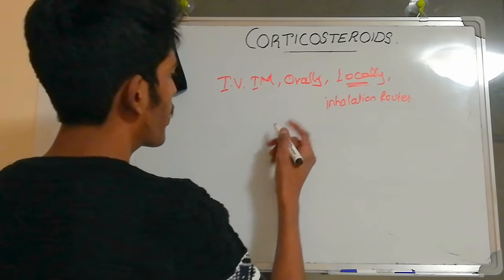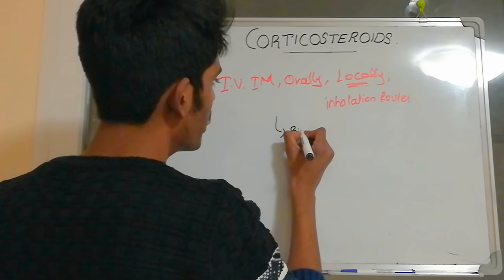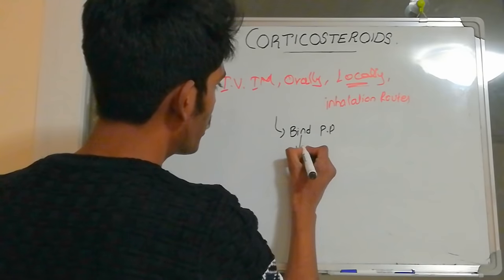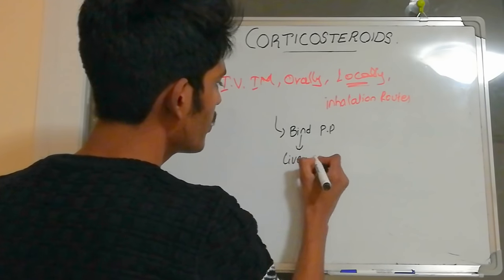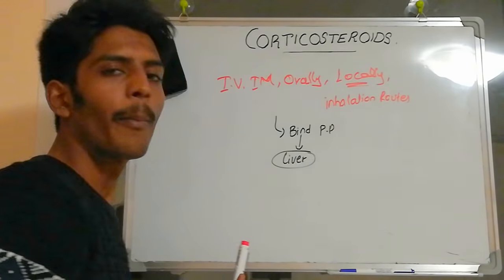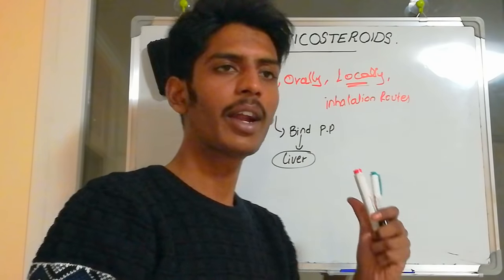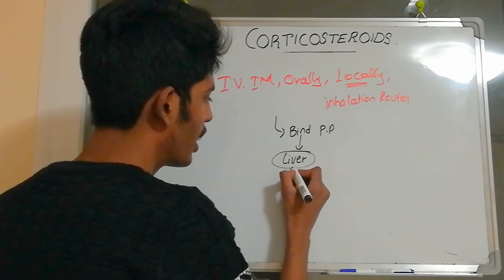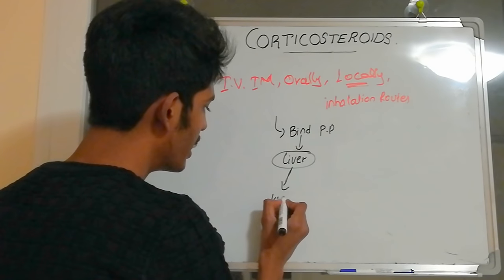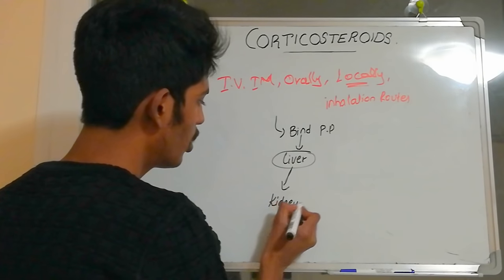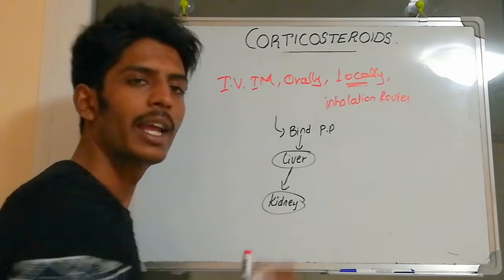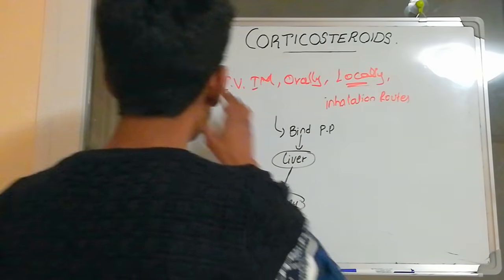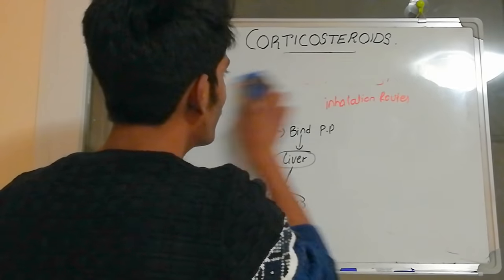Corticosteroids are well absorbed in the GI tract. Once absorbed, they bind with plasma proteins and are transported to the liver for metabolism. They undergo oxidation via microsomal enzymes, forming metabolites that are excreted by the kidney.